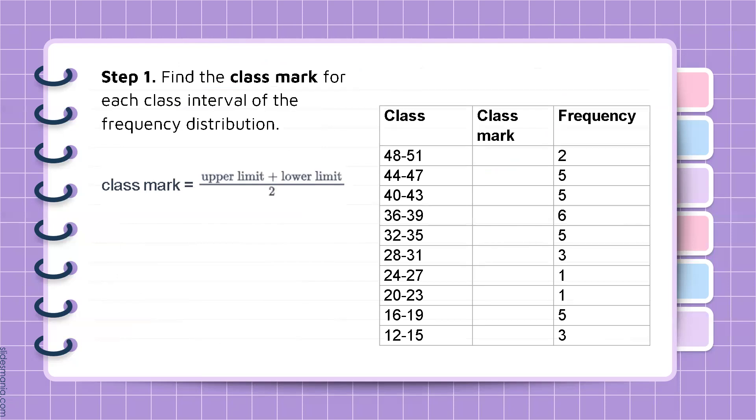Step 1 is to find the class mark for each class interval of the frequency distribution. The class mark is equal to the upper limit plus the lower limit divided by 2. For the lowest class interval, 12 to 15, so we add 12 plus 15 is equal to 27. And 27 divided by 2 is 13.5. The next class interval is 16 to 19. So 16 plus 19 is equal to 35. And 35 divided by 2 is 17.5. And we do the rest of the class intervals.